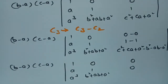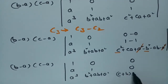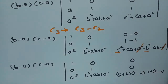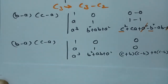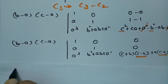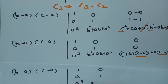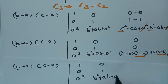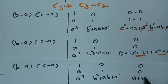The a² terms cancel, leaving c²−b² which can be written as (c+b)(c−b). Also taking 'a' common from the remaining term gives a(c−b). Now taking (c−b) common from column 3, so the determinant becomes (b−a)(c−a)(c−b) times: 1, a, a³ / 0, 1, b²+ab+a² / 0, 0, (a+b+c).